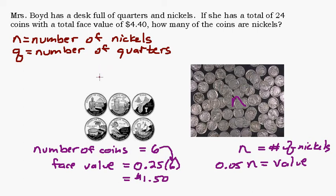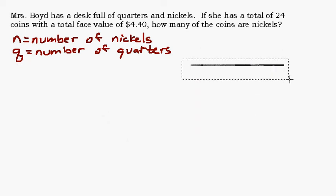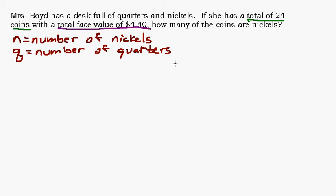I'm going to go ahead and erase this so we can start and have room to set up our equation. We have two facts here. We know that she has a total of 24 coins. When you have two variables, you're going to have to write two equations. We're going to take one equation from the fact that she has 24 coins, and then a whole separate equation from the fact that the total face value is $4.40.